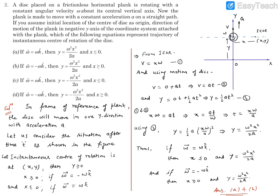Now using equations one and two we can write the value of x which is going to be equal to at by omega. From here we can find the time which is a variable, it's going to be x omega by a.